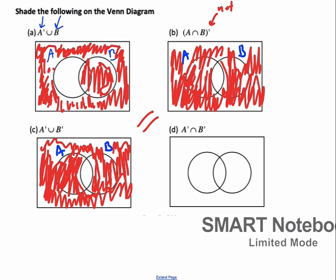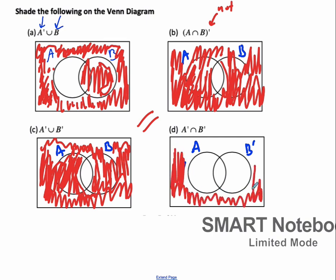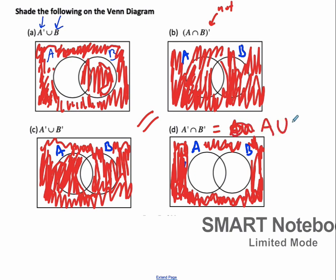Here we have not A and not B — the intersection of not A and not B. If I shade not A, I shade everything outside A. And not B is everything outside B. So the intersection of not A and not B is just the outside of both circles. This is what you shade in common for not A and not B. You can see that's equivalent to the complement of A union B.